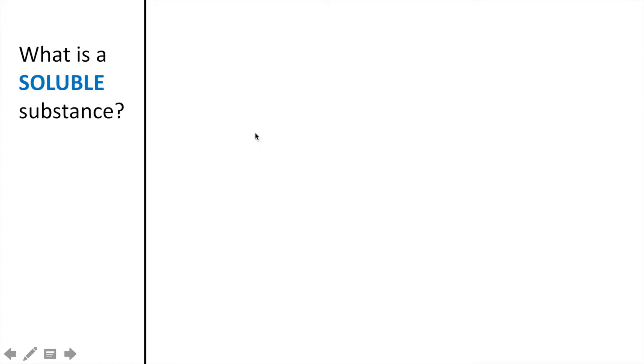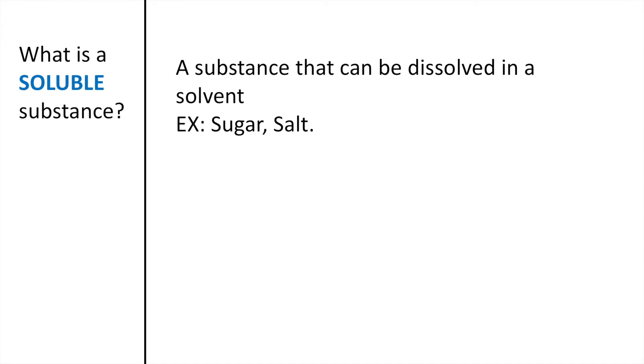When we say that something is a soluble substance, we're saying that that substance can be dissolved in a solvent. For example, we know that sugar and salt are able to dissolve when placed into a liquid.